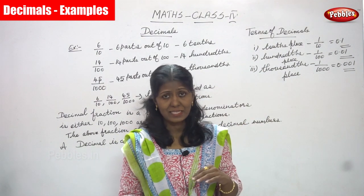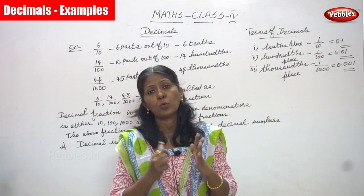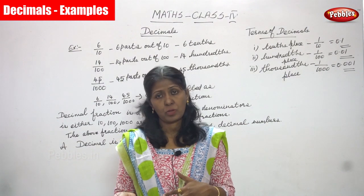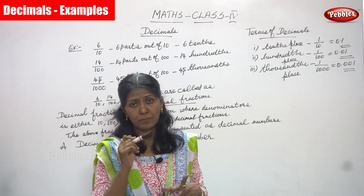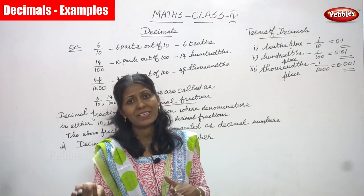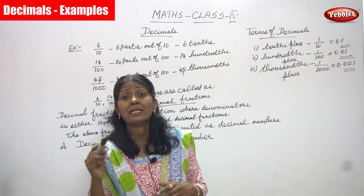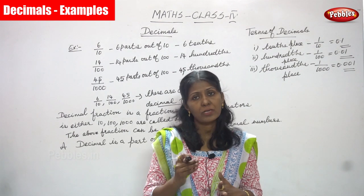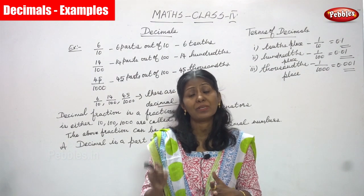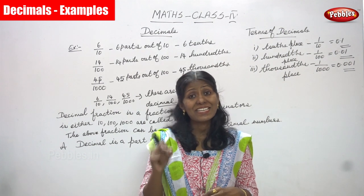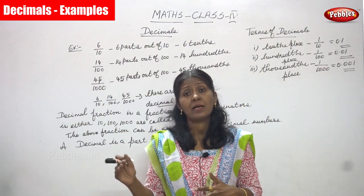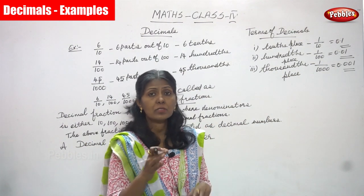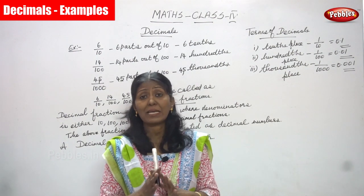But while you go for decimals, after the whole number you have to put a point. For example, 1.6 — 1 is a whole number, and I put a point, that is a decimal point. After the point, the first number that comes is called the tens place value. The next number is hundreds, and the next number is thousands. This is what you have to memorize — it is very important.